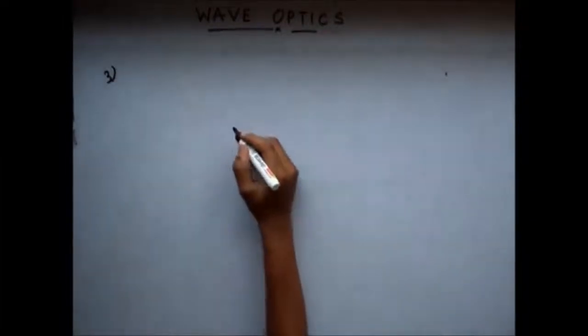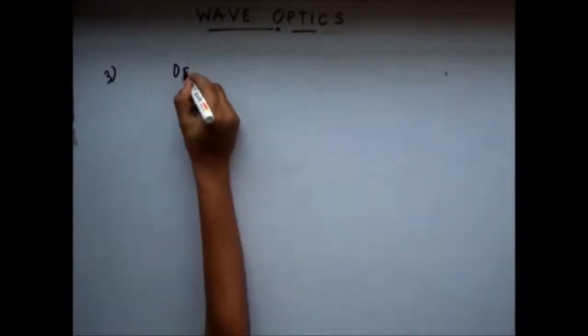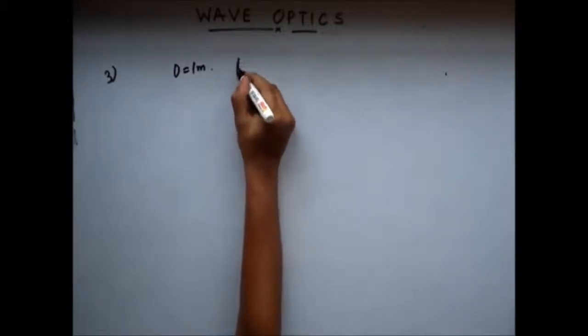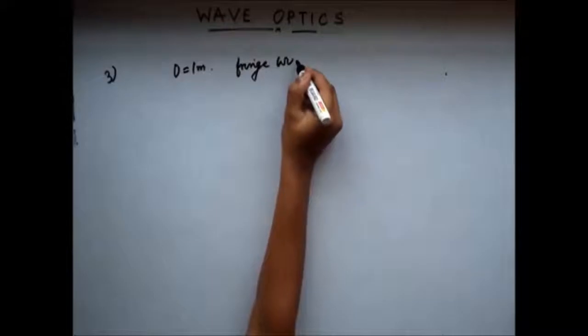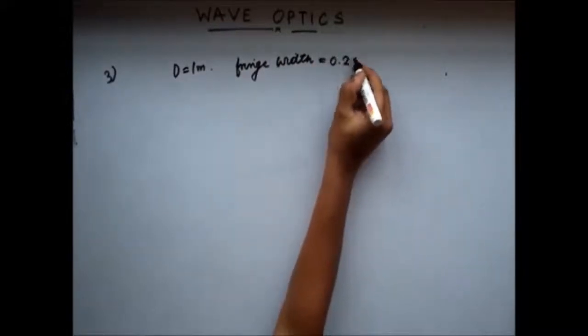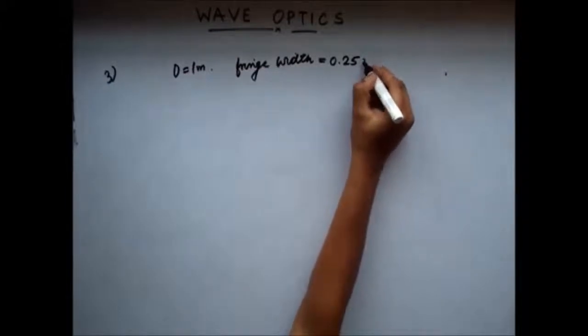The question is as follows: in a Lloyd's mirror, d is 1 meter, the fringe width is 0.25 mm.